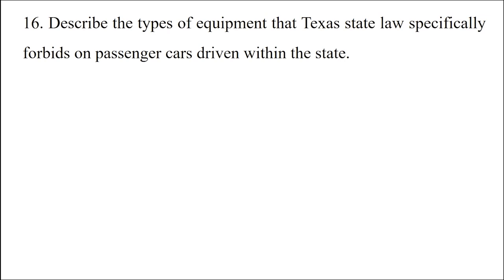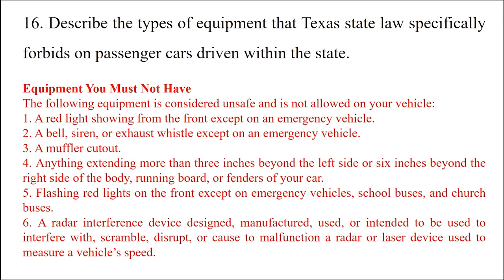Question: Describe the types of equipment that Texas state law specially forbids on passenger cars driven within the state. Equipment you must not have — the following is considered unsafe and not allowed: 1) A red light showing from the front except on an emergency vehicle. 2) A bell, siren, or exhaust whistle except on an emergency vehicle. 3) A muffler cutout. 4) Anything extending more than 3 inches beyond the left side or 6 inches beyond the right side of the body, running board, or fenders of your car. 5) Flashing red lights on the front except on emergency vehicles, school buses, and church buses. 6) A radar interference device designed, manufactured, or intended to interfere with, scramble, disrupt, or cause to malfunction a radar or laser device used to measure a vehicle's speed.